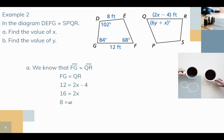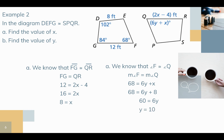Part B: find Y. The expression 6Y plus X is an angle matching angle F, which equals 68 degrees. We already solved for X, so we substitute X equals 8 into the expression. Solving 6Y plus 8 equals 68, we find that Y equals 10.